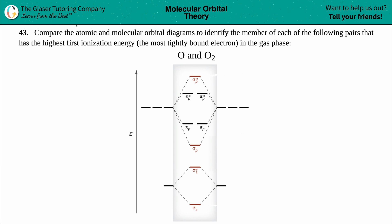Number 43, compare the atomic and molecular orbital diagrams to identify the member of each of the following pairs that has the highest first ionization energy, which is the most tightly bound electron in the gas phase.